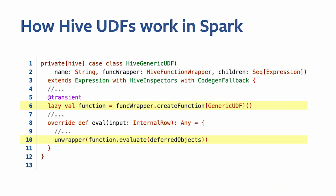Looking at one of those wrapper classes — HiveGenericUDF — this real code extends expression and overrides the eval method. You can see that an instance of Hive's UDF is created inside this wrapper. Inside eval, it calls the Hive UDF instance's evaluate method, with additional wrapping and unwrapping between Hive and Spark types.